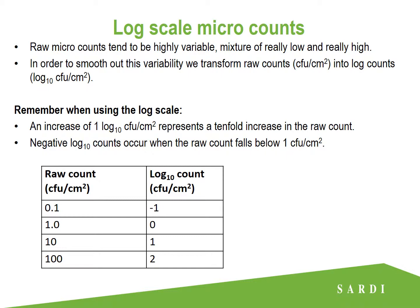Raw micro counts tend to be really highly variable — we get either lots of really low or really high counts, which makes it difficult to identify meaningful trends in the data. So what we do to smooth out this variability is transform these raw counts into log counts. For each increase in a log count of 1, that represents a 10 times increase in the actual raw count. It can be a little confusing, but what actually happens when we use the log scale is we encounter negative counts whenever the raw count falls below one colony forming unit. We'll bring that concept back up later when we look at some real results.